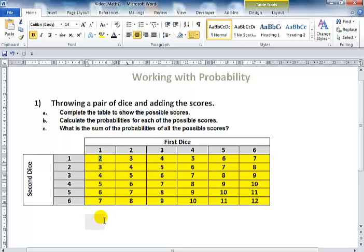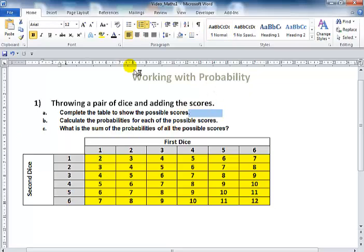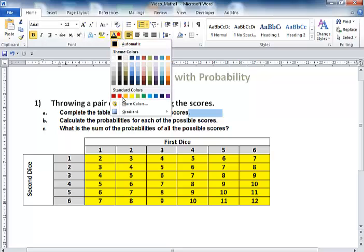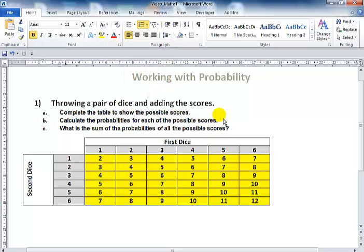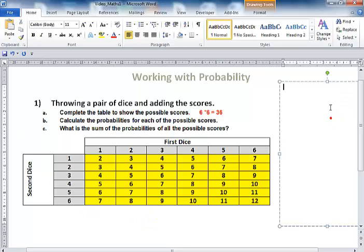Why is it one over 36? Because we have one, two, three, four, five, six and another one to six right here. So all you need to do is six times six, that will give you 36.